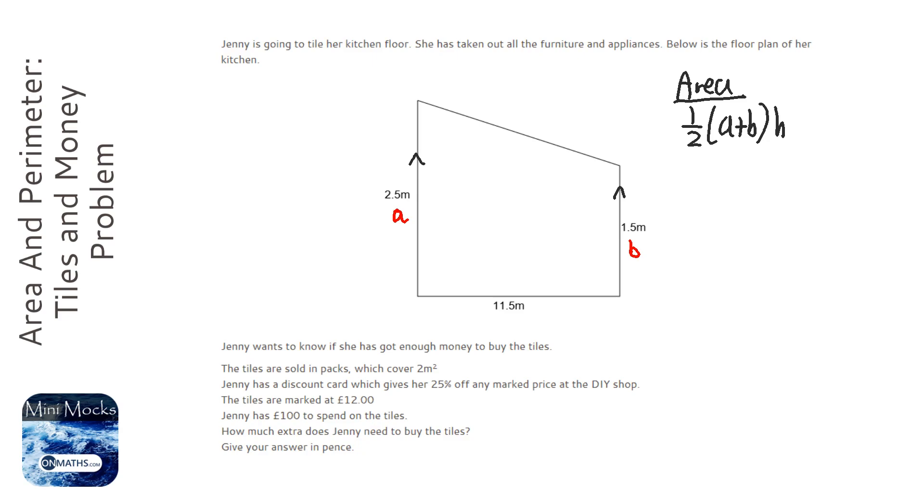h is always the one that connects the two at right angles. So half 2.5 plus 1.5 times 11.5.